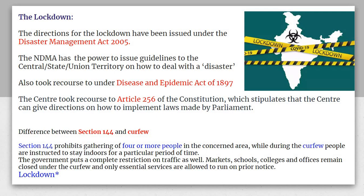There is a difference between Section 144, curfew, and lockdown. Section 144 is imposed by the District Magistrate, and when it is in effect, four or more people cannot gather together. Curfew is more stringent — people are instructed to stay indoors for a particular period of time, and the government puts a complete restriction on traffic; markets, schools, colleges, and offices remain closed, and only essential services are allowed on prior notice.